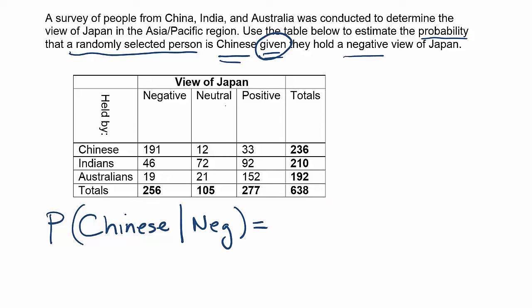What we're going to do is focus all of our attention on the piece that follows the phrase 'given that', because the whole idea is that we're only focusing on those people who hold a negative view of Japan. It says 'given that that's true' — in other words, we're assuming that's true.